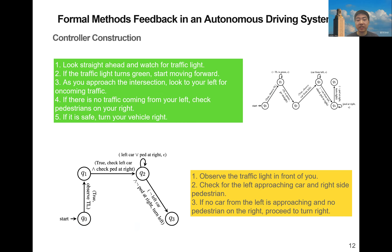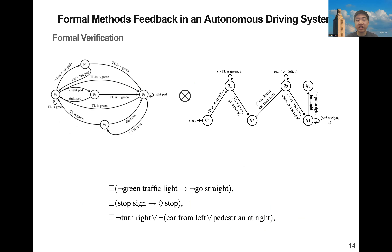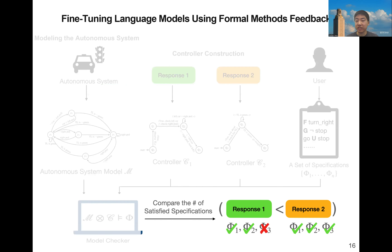Similarly, we obtain another automaton-based controller for the other output. After we have the two controllers, we can verify each controller, when implemented in the system, against each specification. If the first controller satisfies two specifications and the second one satisfies all the specifications, then we conclude that the second response is more preferred than the first response.